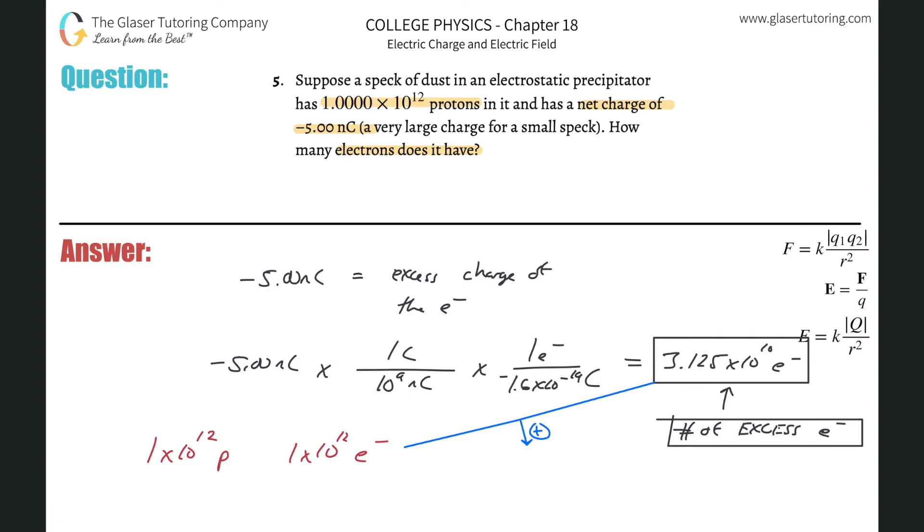So take that value and add then plus 1 times 10 to the 12th. And there we go, so it's going to be 1.03 times 10 to the 12th electrons. That would represent now the total number of electrons.